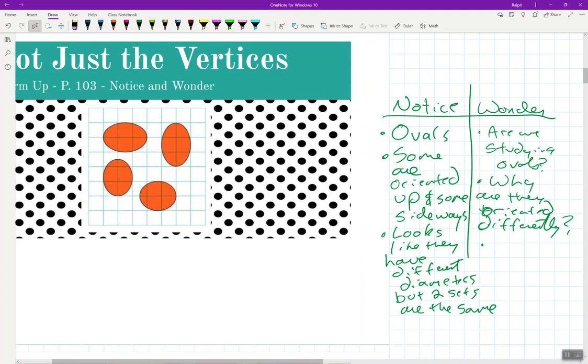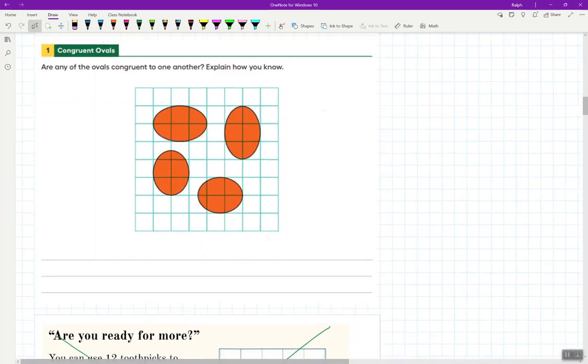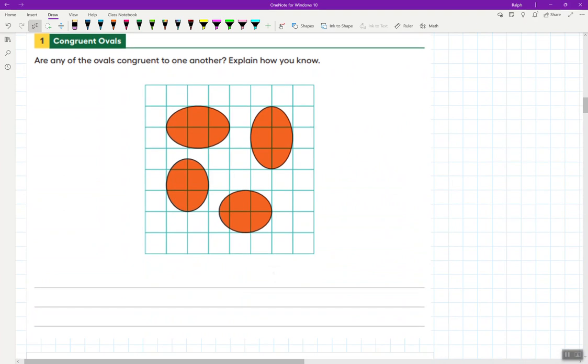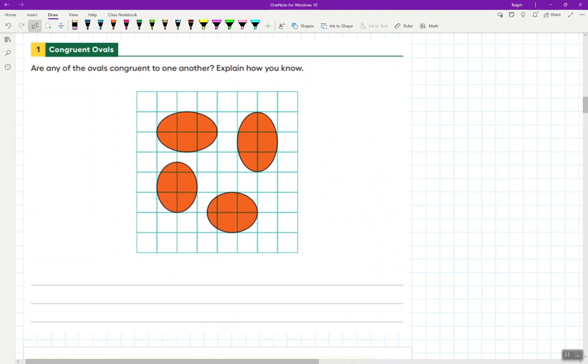So let's dive right into it. We're going to move to activity one, and it's going to be more of a TPS, a Think-Pair-Share. I want you to take a moment and discuss with your group, are any of the ovals congruent to one another? Explain how you know. We are definitely looking at this similar diagram from what we did in the warm-up. So right now, I want you to work with your group and discuss, are any of the ovals congruent to one another? But the key thing always is explain how you know. Take about five minutes on this. Please go ahead and pause the video at this point, and then resume when it seems the majority or all of the class have completed this first task.